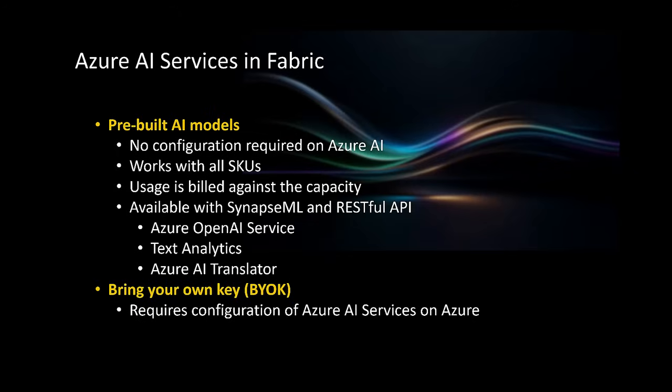With the pre-built AI models option, no configuration is required on Azure AI. You don't need to go to Azure AI and configure models, set parameters, and so on. You can simply call these APIs as part of your notebook code. The good thing is it works with all SKUs — it's not limited to F64 or above. Even certain features like AI skills are only available on F64 or higher, but this works with all SKUs. I have tested this with even F2. Also, you are not going to see a separate bill — it simply consumes your capacity, and the AI services usage will be seen as part of your capacity bill.